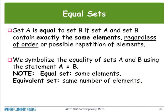Equal sets: Set A is equal to Set B if Set A and Set B contain exactly the same elements, regardless of order or possible repetition of elements. The notation to represent equal sets is simply Set A equals Set B. The difference between equal sets and equivalent sets is that for equal sets, the members must match exactly one by one.